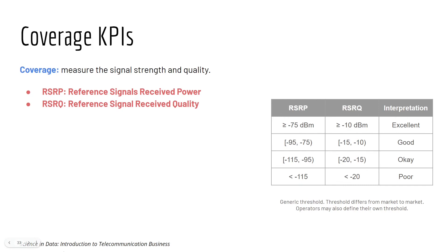Coverage KPI measures the signal strength and quality. We have RSRP and RSRQ, which allow us to translate numerical values into meaningful interpretations. Looking at the table: RSRP and RSRQ are negative values measured in dBm, or decibel-milliwatt — the bigger the number, the better. For example, RSRP greater than minus 75 dBm means the signal strength is excellent; between minus 95 and minus 75 is good signal strength; anything less than minus 115 is considered poor. These are generic thresholds — they can differ by market, and operators usually define their own.